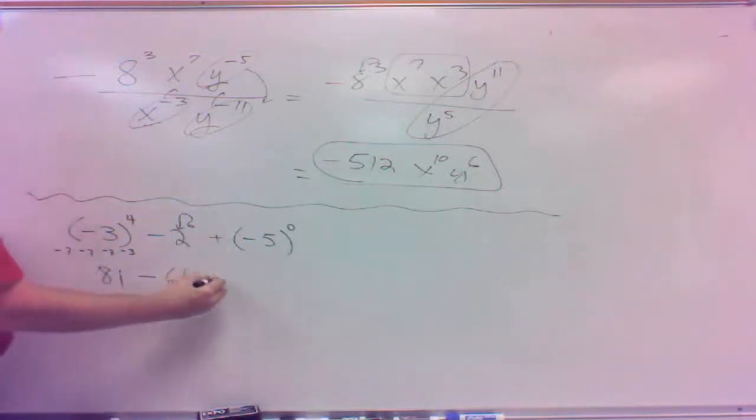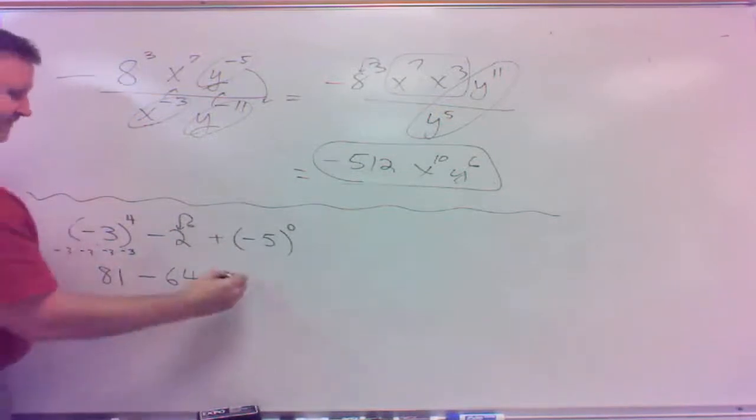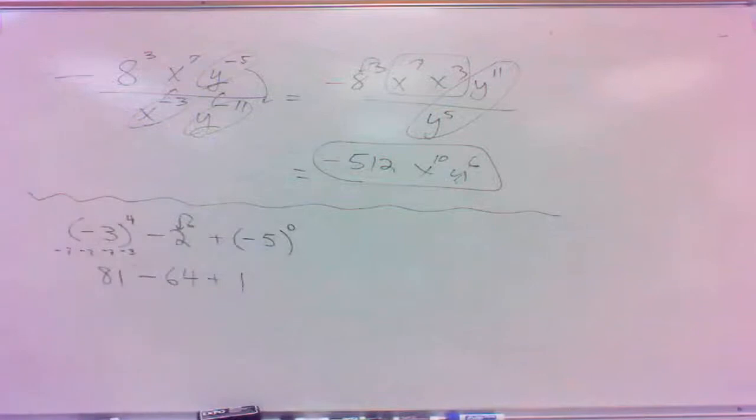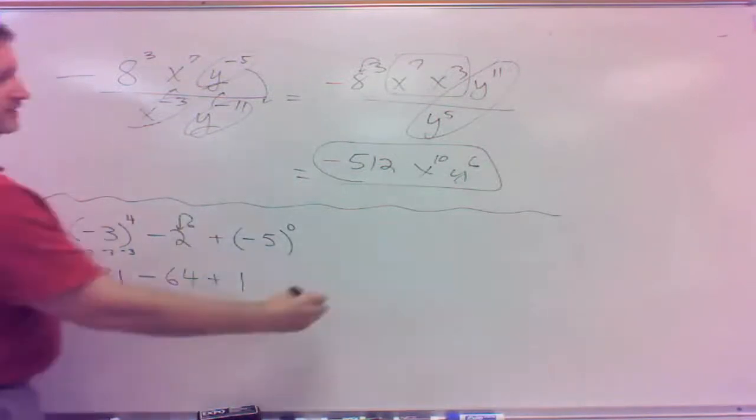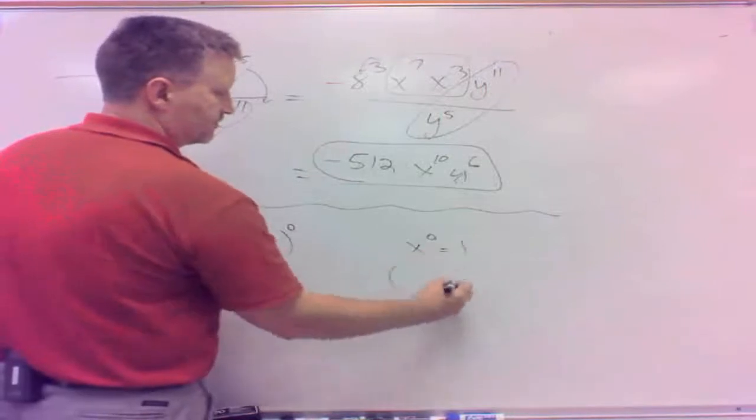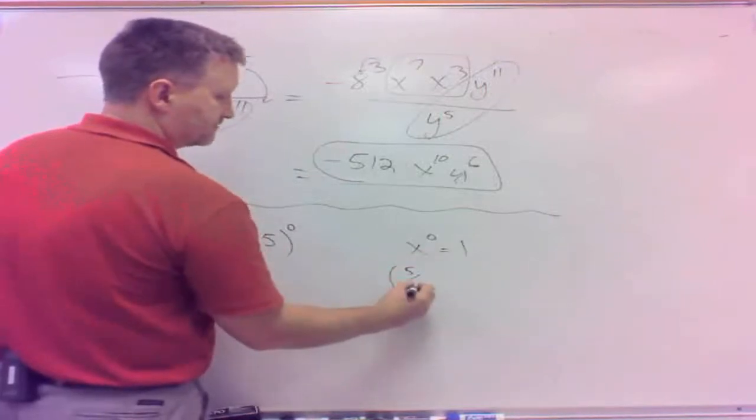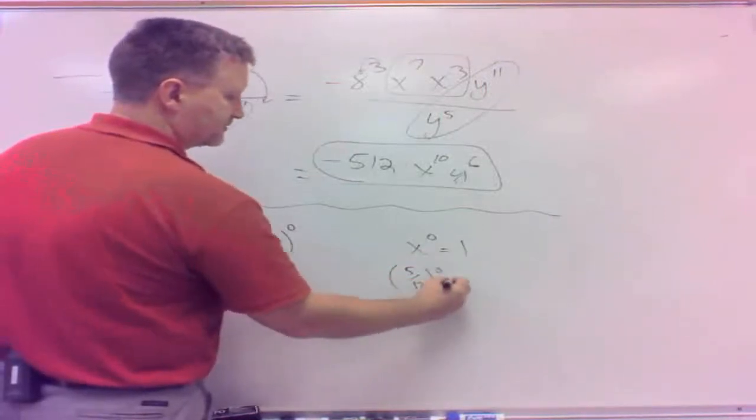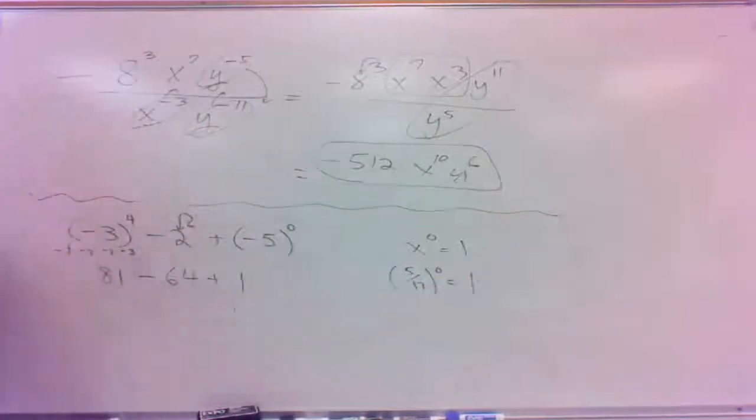Then, what about 0 power? Anything to the 0 power is 1. Negative 5 to the 0 is 1. X to the 0 is 1. 5, 17th to the 0 is 1. Anything to the 0 power is 1. That's the rule there. So, I've got 81 minus 64 plus 1. That'll all be 16.